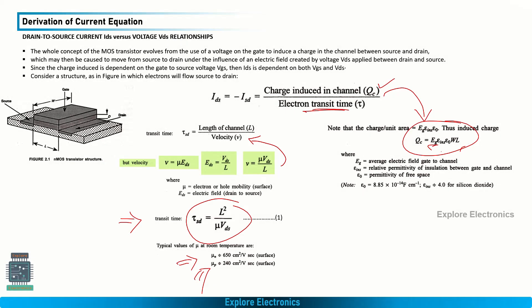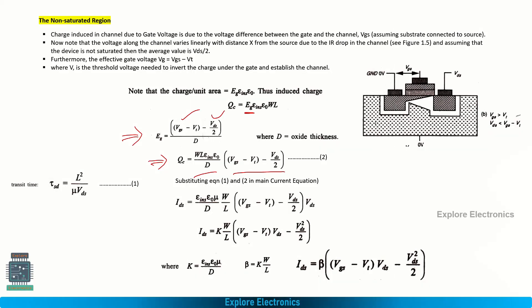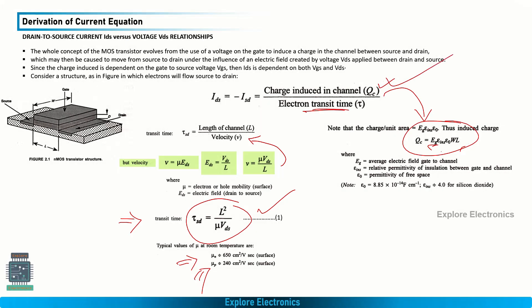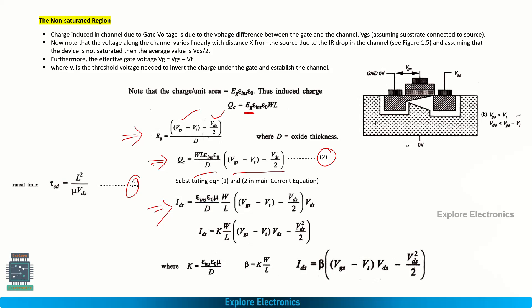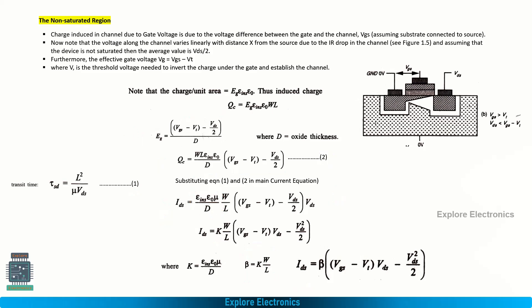Now substituting both the transit time and Qc expressions into IDS = Qc / tau_SD, the current expression for the non-saturation region becomes: IDS = (epsilon_INS × epsilon_0 × mu / d) × (W / L) × (VGS − VT − VDS/2) × VDS. Grouping the constants epsilon_0, epsilon_INS, mu, and d into K, this simplifies to K × (W/L) × [(VGS − VT) × VDS − VDS²/2]. Taking K × (W/L) as beta, the standard expression becomes: IDS = beta × [(VGS − VT) × VDS − VDS²/2].